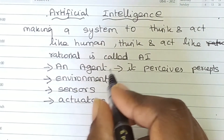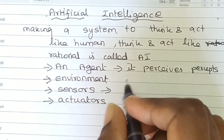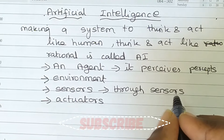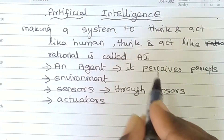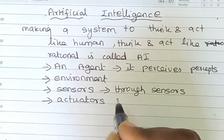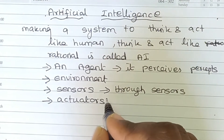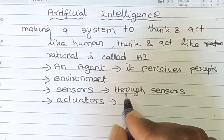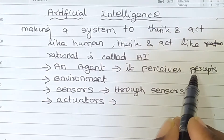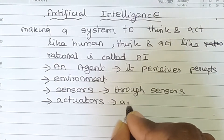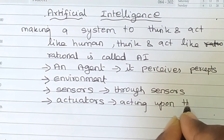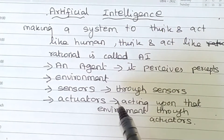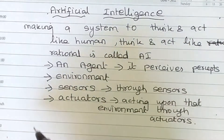The agent is able to perceive input from the environment. The agent will also act upon the environment through actuators. So an agent perceives percepts from the environment through sensors and acts upon that environment through actuators. Artificial intelligence makes use of all four of these things.